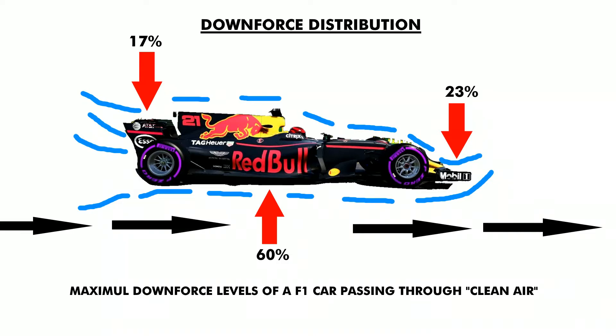As for how the aerodynamic grip is distributed along the car, here are the numbers: 23% is produced on the front wings, about 60% by the floor and side barge boards, and 17% on the rear wings — accumulating to 100%.